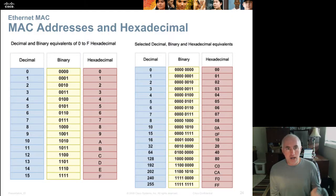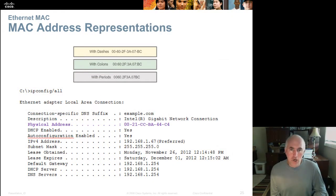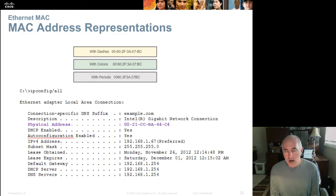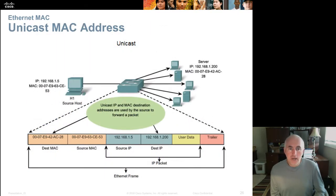This is a throwback to IP subnetting — looking at how a MAC address is written in hexadecimal and how it can be converted to binary or decimal. On a Windows PC, typing 'ipconfig /all' shows the MAC address with a dash separator between every octet. Unix systems typically use colons, and Cisco routers and switches often use periods. All three are acceptable.